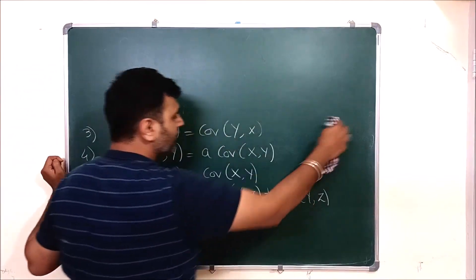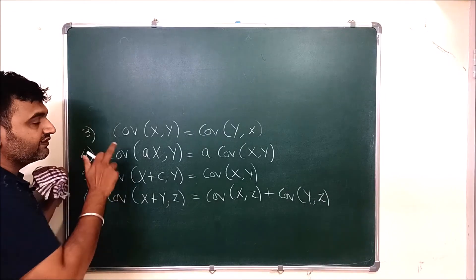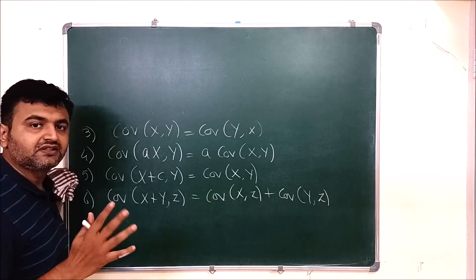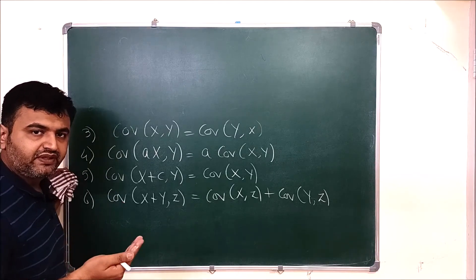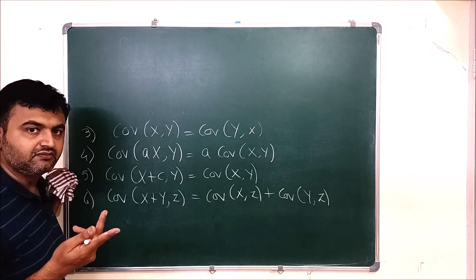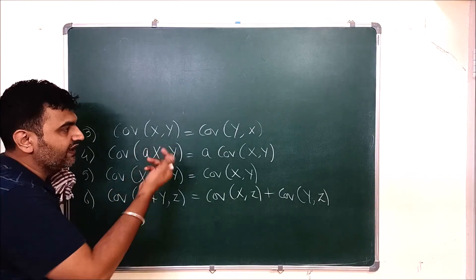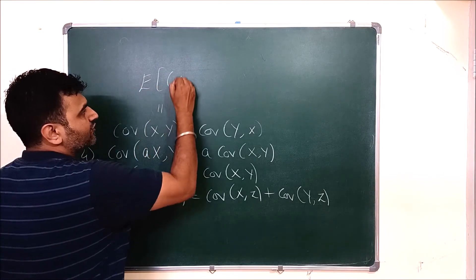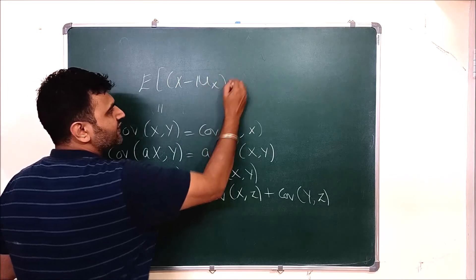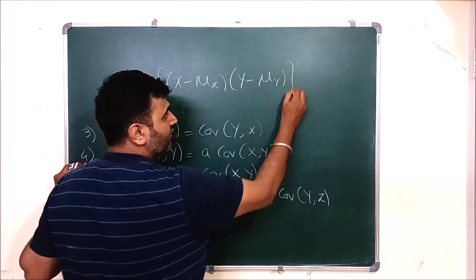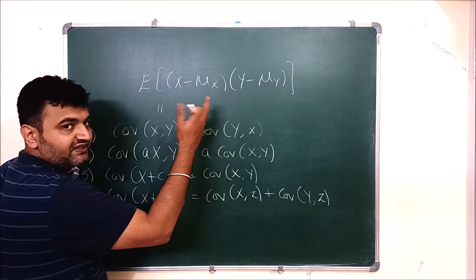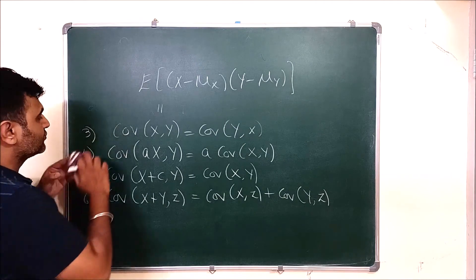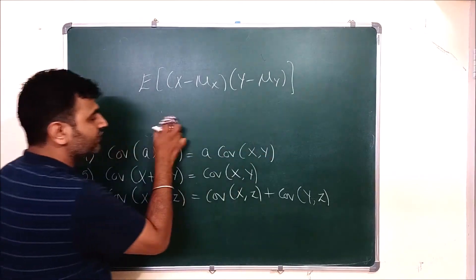The third property is commutativity: Cov(X,Y) = Cov(Y,X). This is easy because Cov(X,Y) = E[(X - mu_X)(Y - mu_Y)]. Since both are real numbers, you can interchange the product, giving Cov(Y,X). So covariance is commutative in nature.